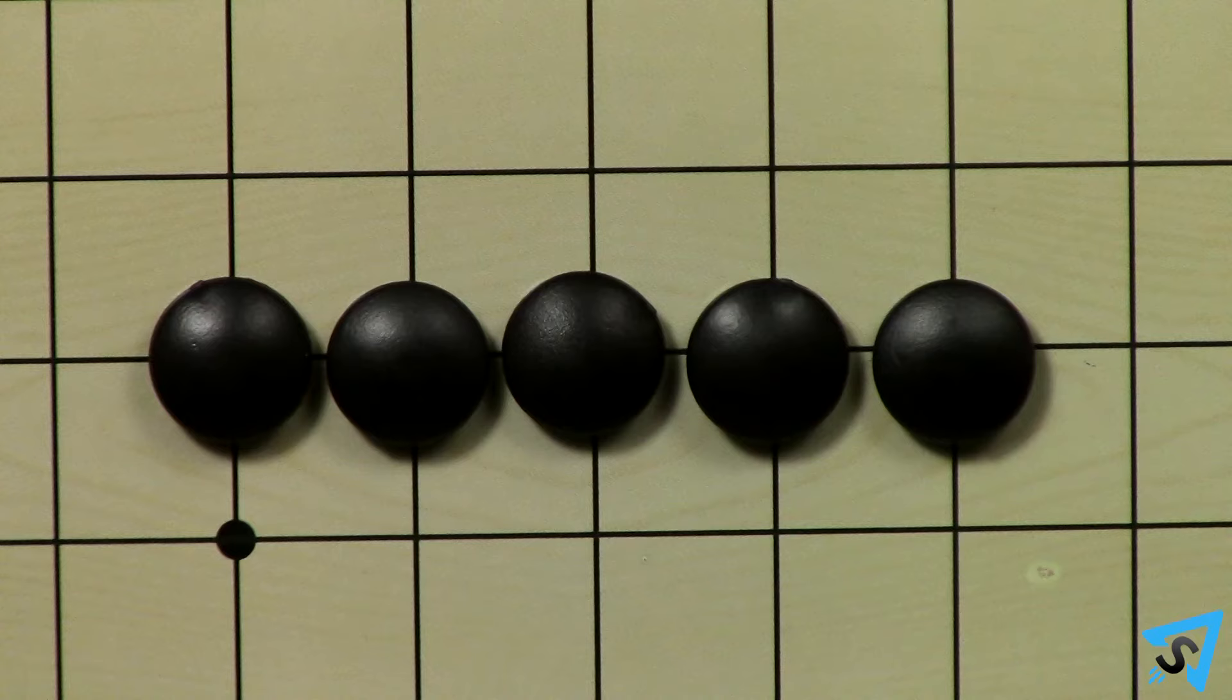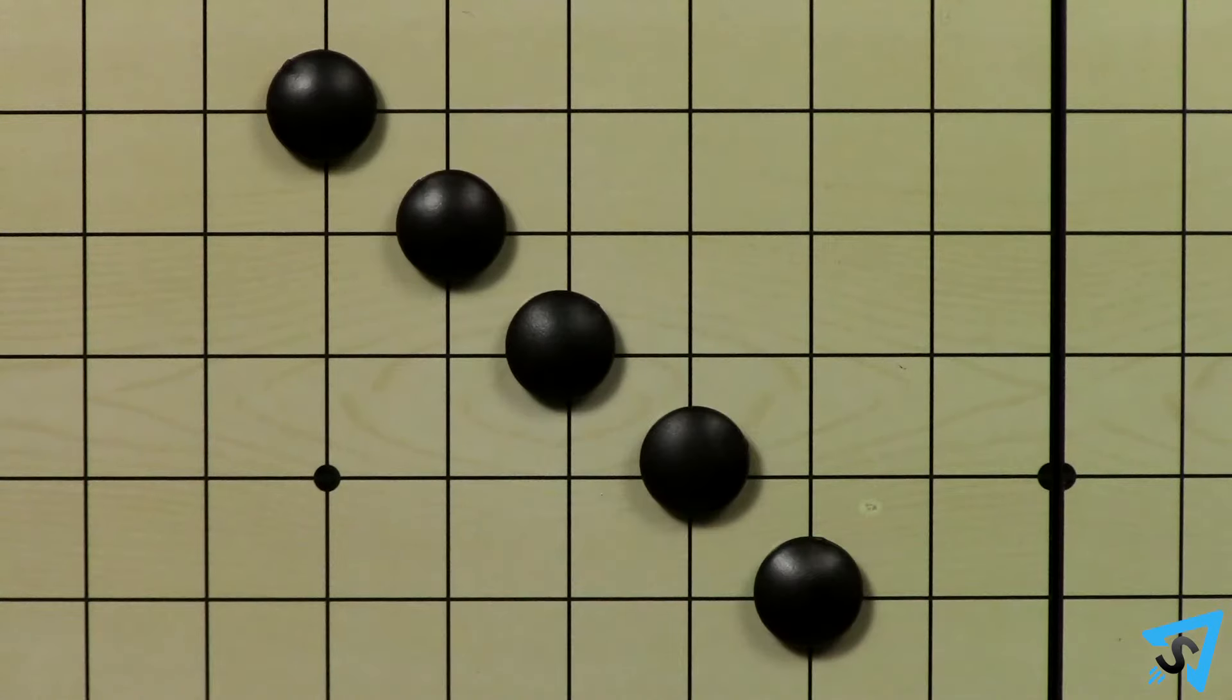The object of this two-player game is to be the first player to get five in a row horizontally, vertically, or diagonally.